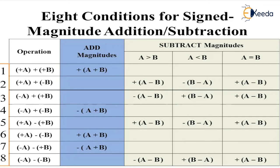The first condition: if A is positive and B is also positive and you need to add both the numbers, your answer will be +(A+B). Now, the second condition: if A is positive and B is negative, you need to perform a subtraction operation where A minus B, and the result will be positive when A is greater than B.